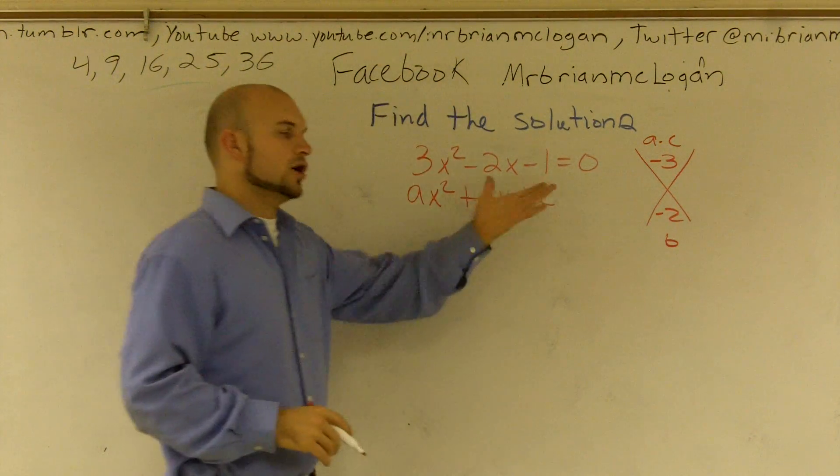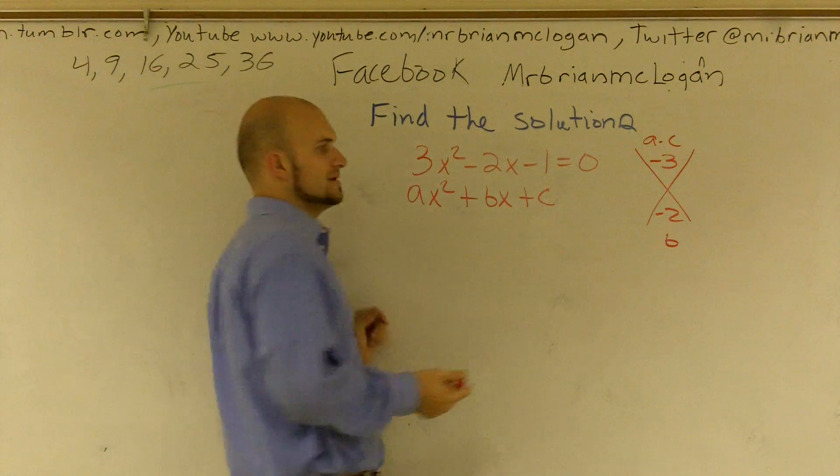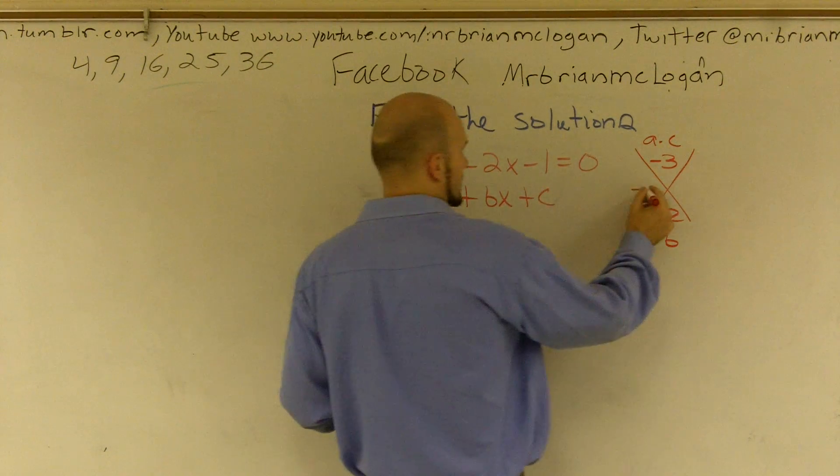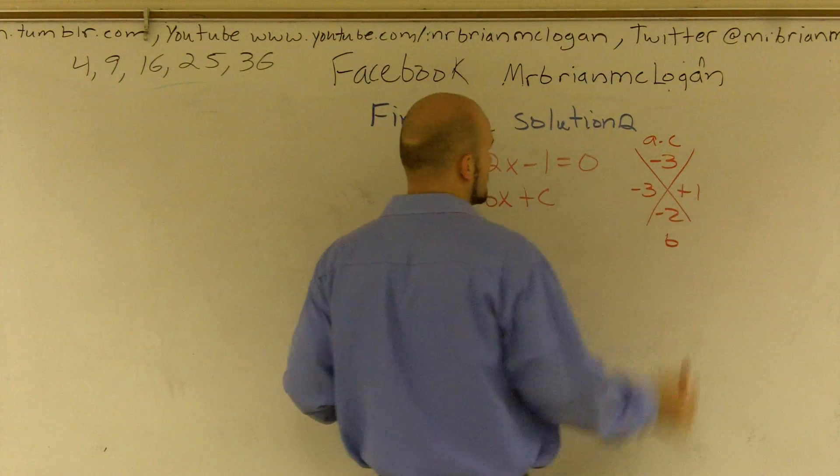So what two numbers multiply to give me negative 3 but add to give me negative 2? Well, that's going to be negative 3 and positive 1.